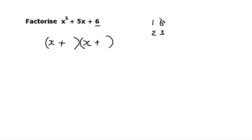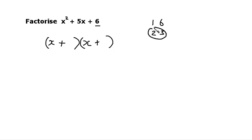We've got to choose one of these pairs of factors which will add together to give us 5, because when we multiply this out, whatever we have at the end of the brackets will multiply by the x's to get 5x. So which one of these two is going to add together to make 5? Well, obviously the answer is going to be 2 and 3. So our numbers in our brackets are going to be 2 and 3, giving us x plus 2 and x plus 3.